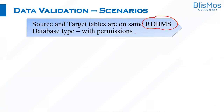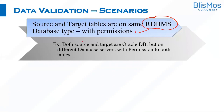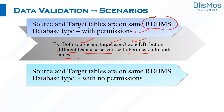The next scenario is where source and target tables are on the same RDBMS database, with the testing team having permissions to both source and target, but on different database servers. For example, assume source and target are both on Oracle but on different database servers — unlike the earlier scenario where Oracle was on the same server. Here, the testing team would still have access to both source and target.